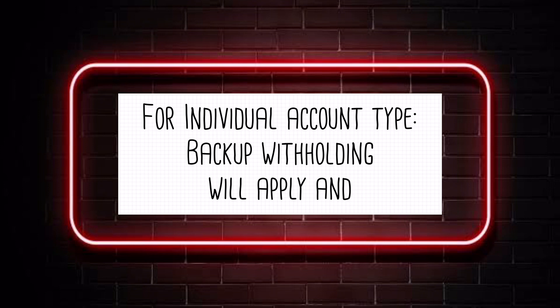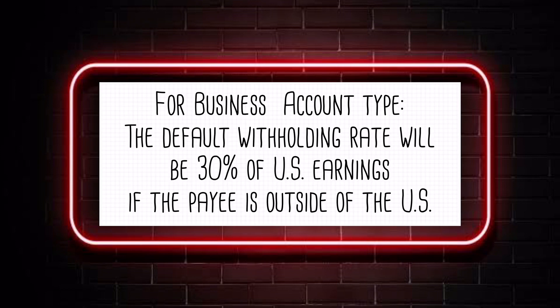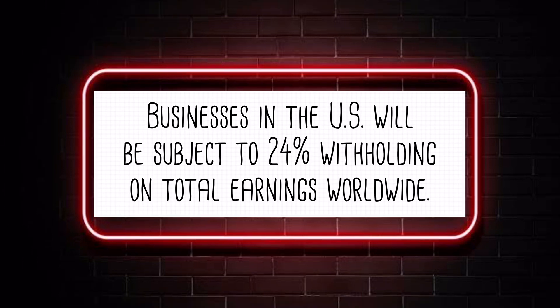For individual account type, backup withholding will apply and 24% of total earnings worldwide will be withheld. For business account type, the default withholding rate will be 30% of U.S. earnings if the payee is outside of the U.S. Businesses in the U.S. will be subject to 24% withholding on total earnings worldwide.